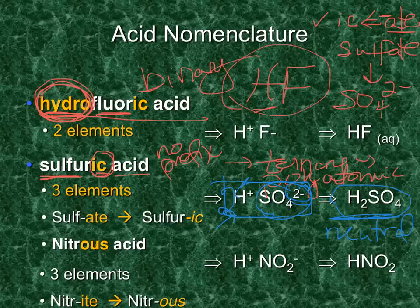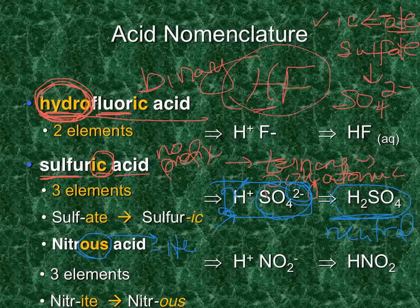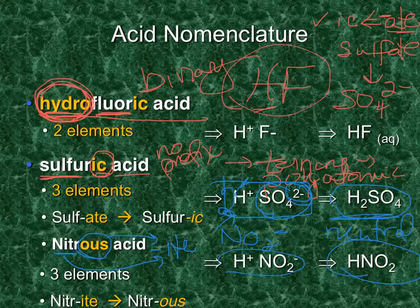Nitrous acid: there's no prefix, so there's a polyatomic ion and it's ternary. It ends in '-ous', and '-ous' goes with '-ite' ('he ate ick and got stomach-ite-us'). So we need to find the polyatomic nitrite. Nitrite is NO2 with a minus-1 charge, giving the formula HNO2 for nitrous acid.